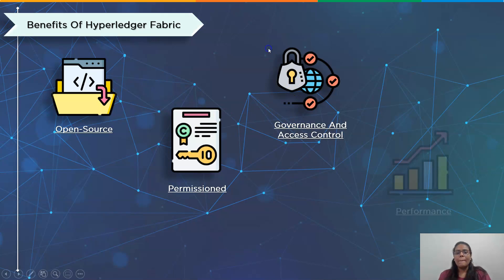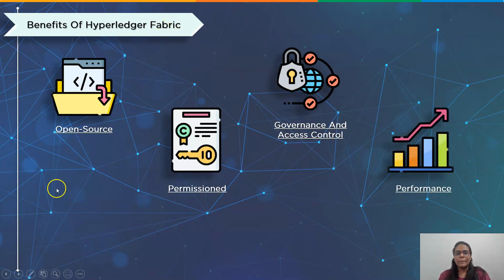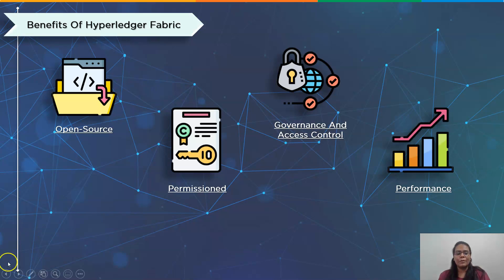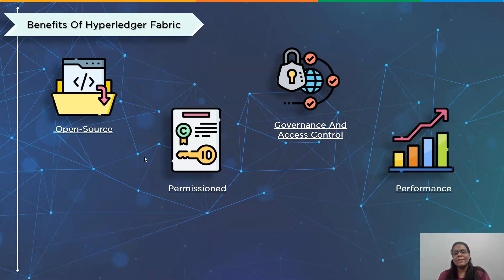The fourth benefit is performance. Because of its consensus mechanism, Hyperledger Fabric can support high transaction throughput for enterprise-grade use cases. As a permissioned blockchain system, it does not have to deal with Byzantine fault tolerance, which might result in slower network transaction validation performance.